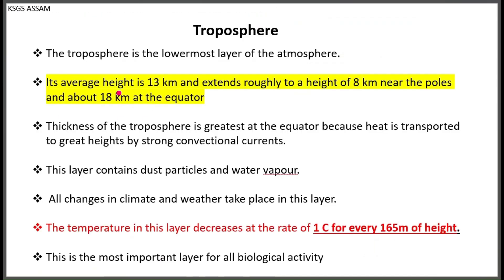The thickness of the troposphere is greatest at the equator because air is transported to great heights by strong convectional currents. The average height of the troposphere is 13 km, about 8 km at the poles and 18 km at the equator. This layer contains dust particles and water vapour.